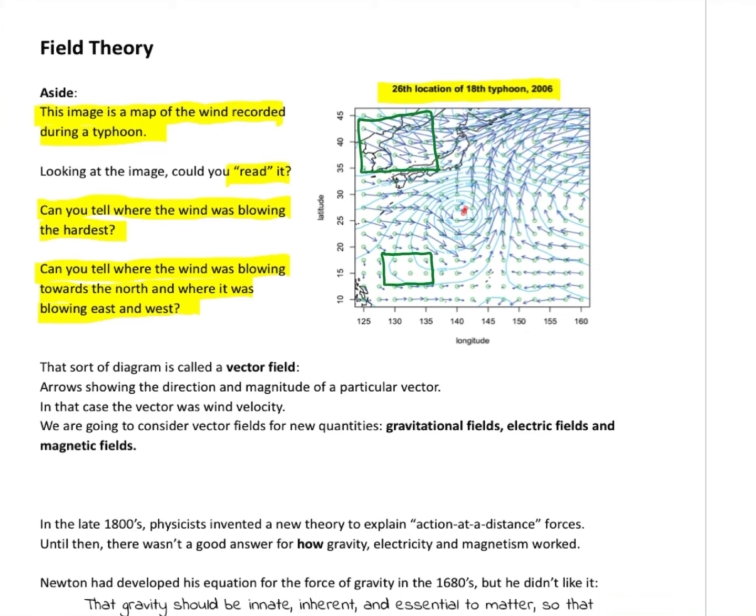Conversely, these arrows up here look like they're really long, so I'm going to guess that's where the wind is blowing the most. In this kind of corner down here the arrows seem to be pointing to the west, so I would say that's where the wind was to the west. Over here they seem to be pointing to the east, here they seem to be pointing north. I don't really see any place where they're pointed straight south.